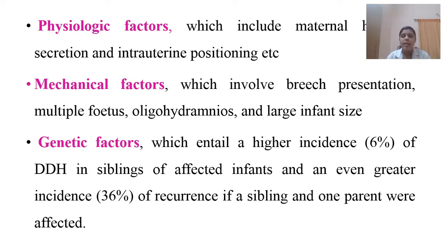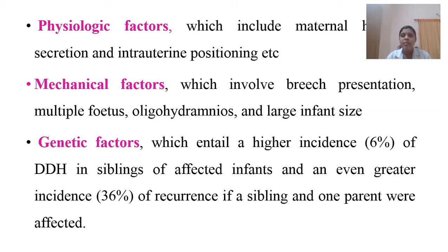Contributing factors are grouped into physiological, mechanical, and genetic categories. Physiological factors include maternal hormone influence — hormones like relaxin cause relaxation of smooth muscles and joints — as well as intrauterine positioning. Mechanical factors include breech presentation delivery, multiple fetuses, and large infant size. Genetic factors are significant; if a sibling or parent has DDH, there is a 30% chance the child will develop it too.